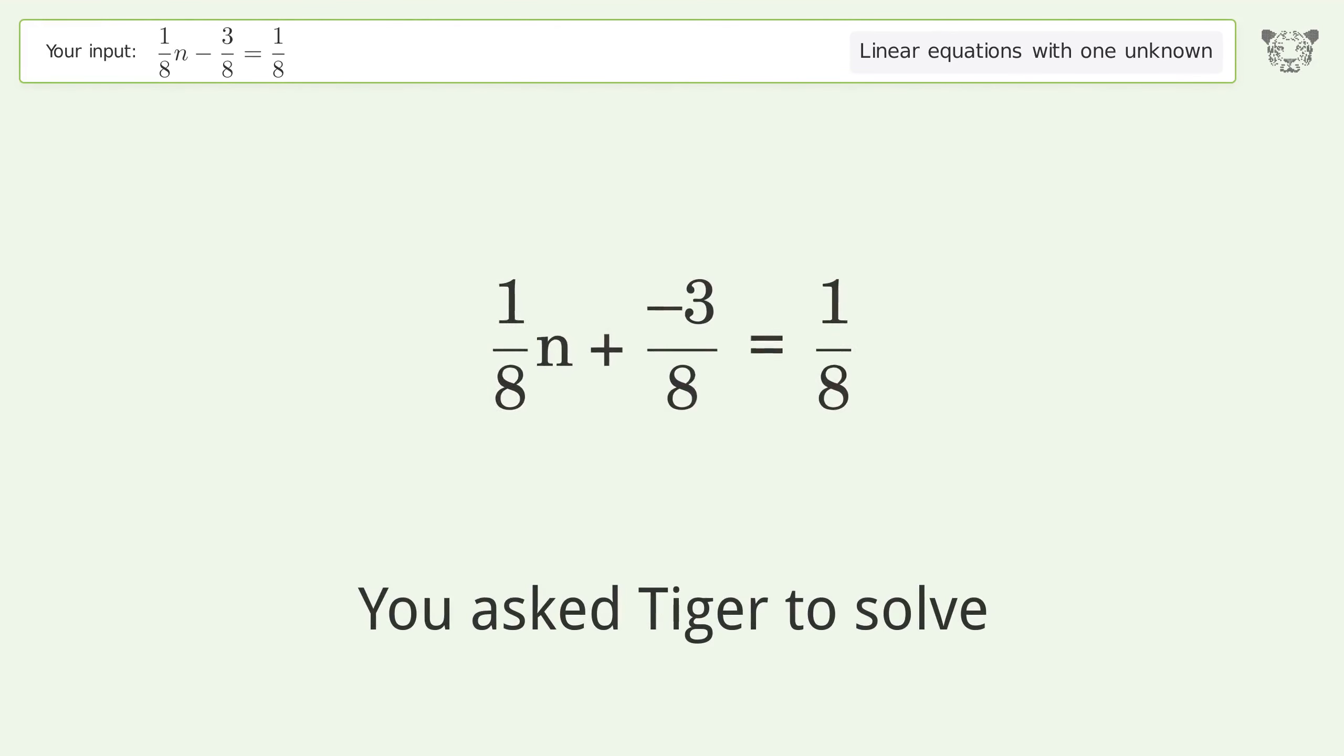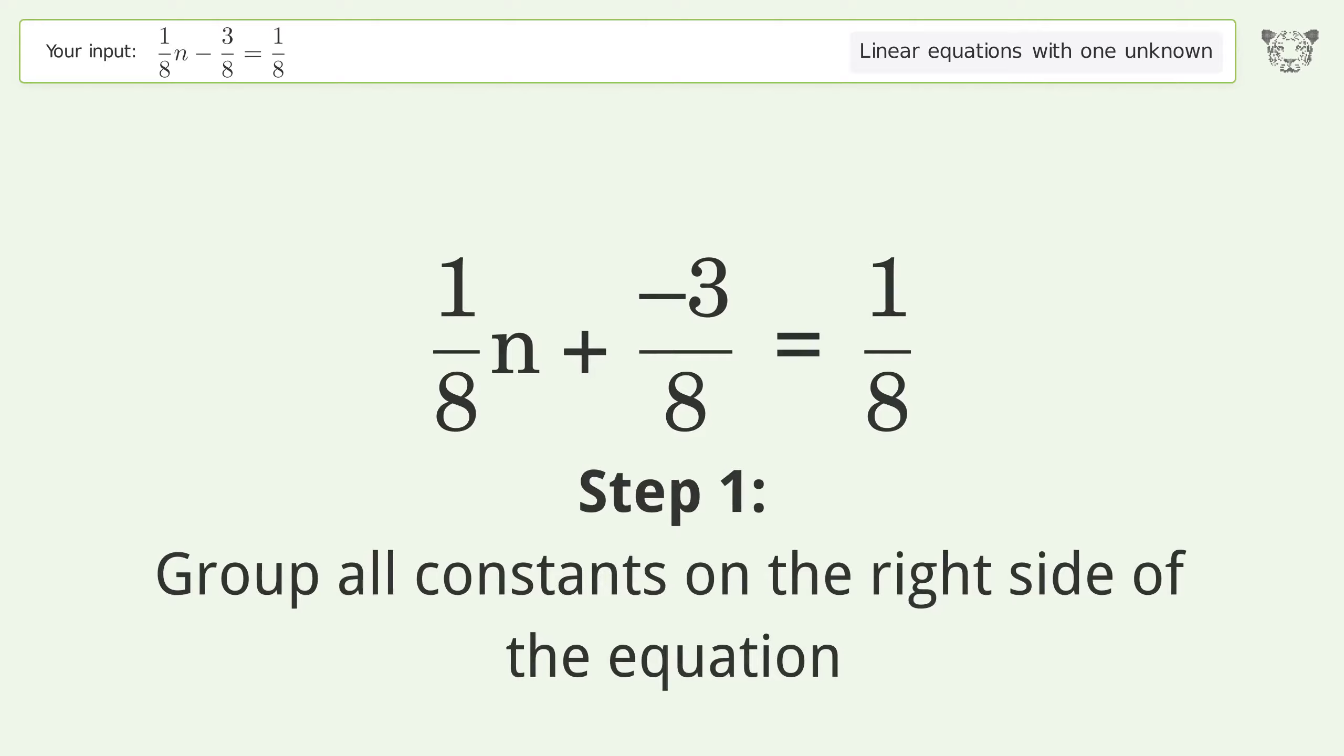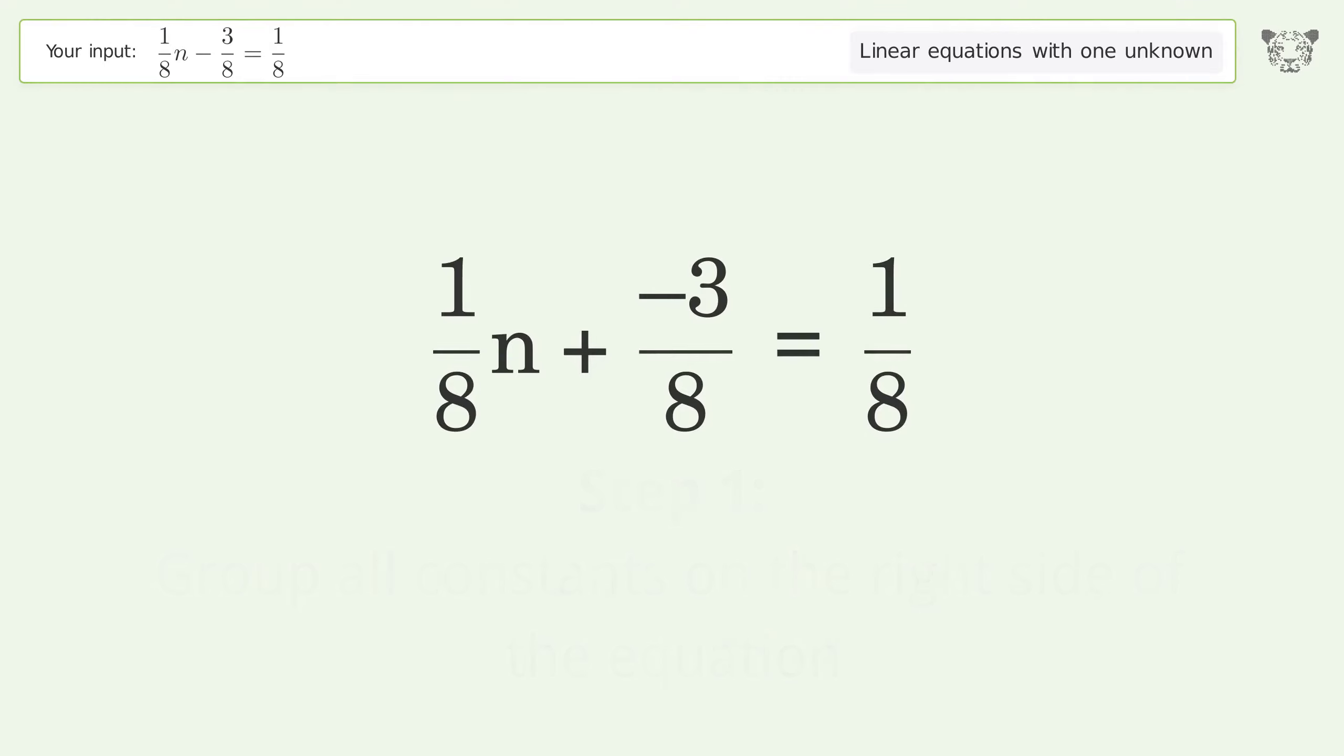You asked Tiger to solve this. It deals with linear equations with one unknown. The final result is n equals 4. Let's solve it step by step. Group all constants on the right side of the equation. Add 3 over 8 to both sides.